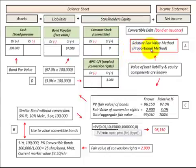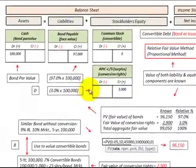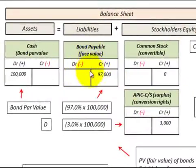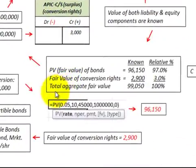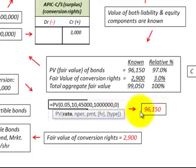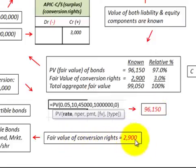Let's look at the relative fair value method or the proportional method. We have a known value for the debt portion of those convertible bonds, and we also know what the equity value is of the conversion rights. Using a similar bond without a conversion feature, we determined that that bond would be worth $96,150. And then the fair value of the conversion rights — we know that they're worth $2,900. That's their market value.